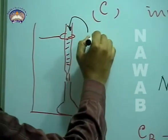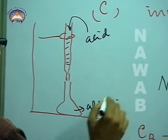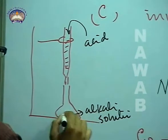We attach it with a stand. So acid is filled in buret. Here we have alkali solution, which we take 25 cm cube.